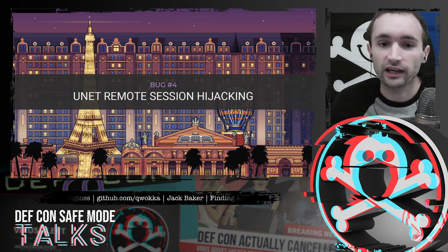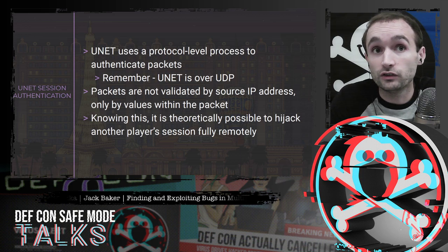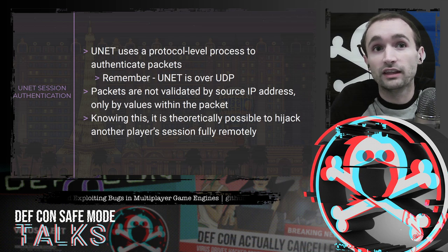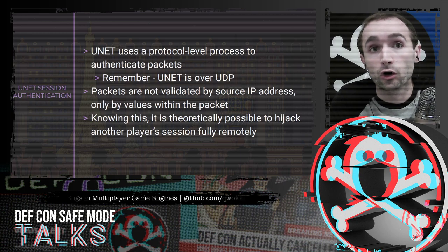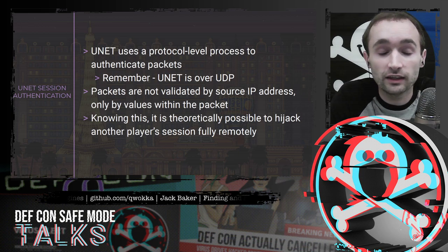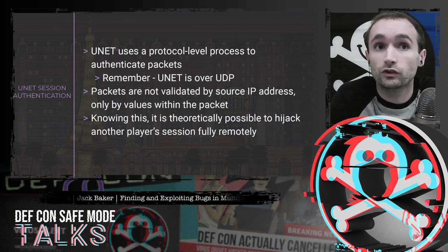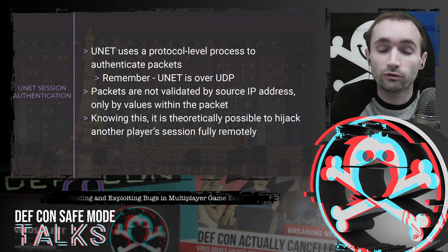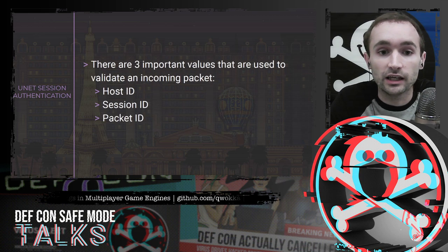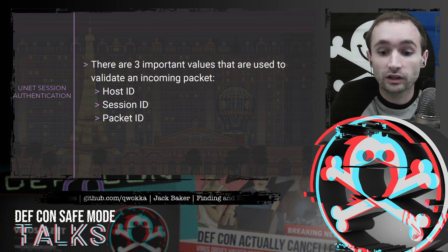Let's talk about our final bug: a UNet session hijacking bug. UNet uses a protocol-level process to authenticate incoming packets because it's implemented over UDP — you don't get the benefits of TCP where a stream is already authenticated. Packets are not validated by source IP address or source port; they're only validated by values within the packet itself. So it's theoretically possible that someone could hijack another player's session totally remotely over the internet, without a man-in-the-middle or LAN access. When UNet validates an incoming packet, there are three important values: the host ID, the session ID, and the packet ID.